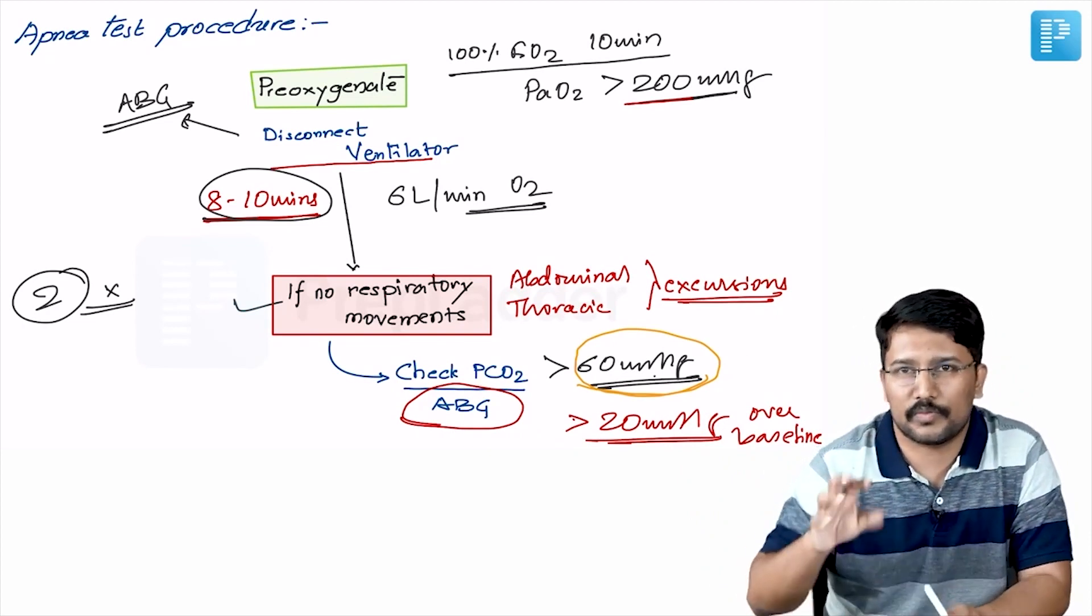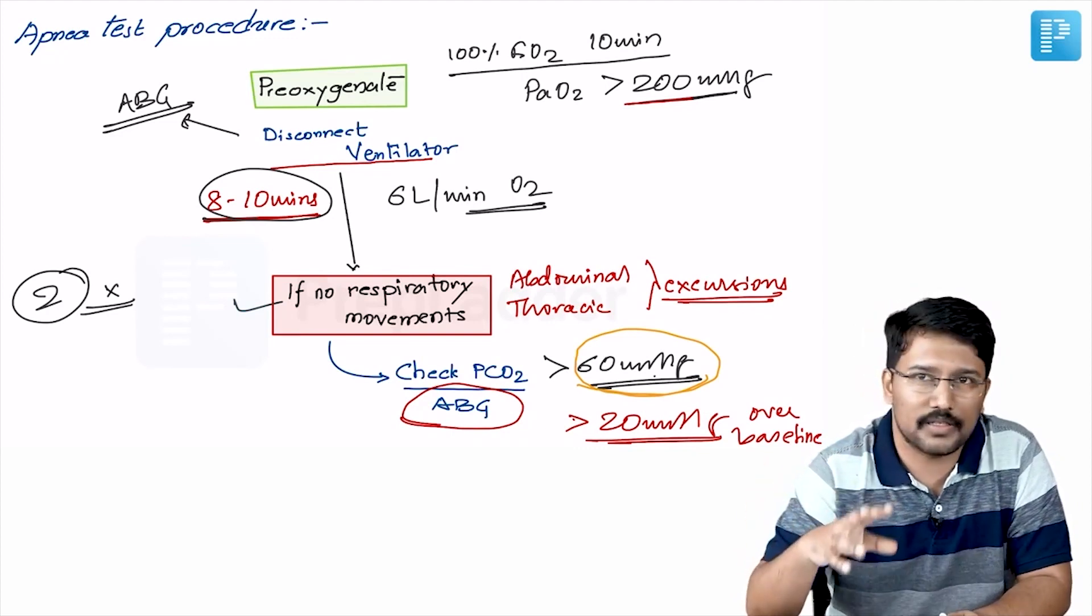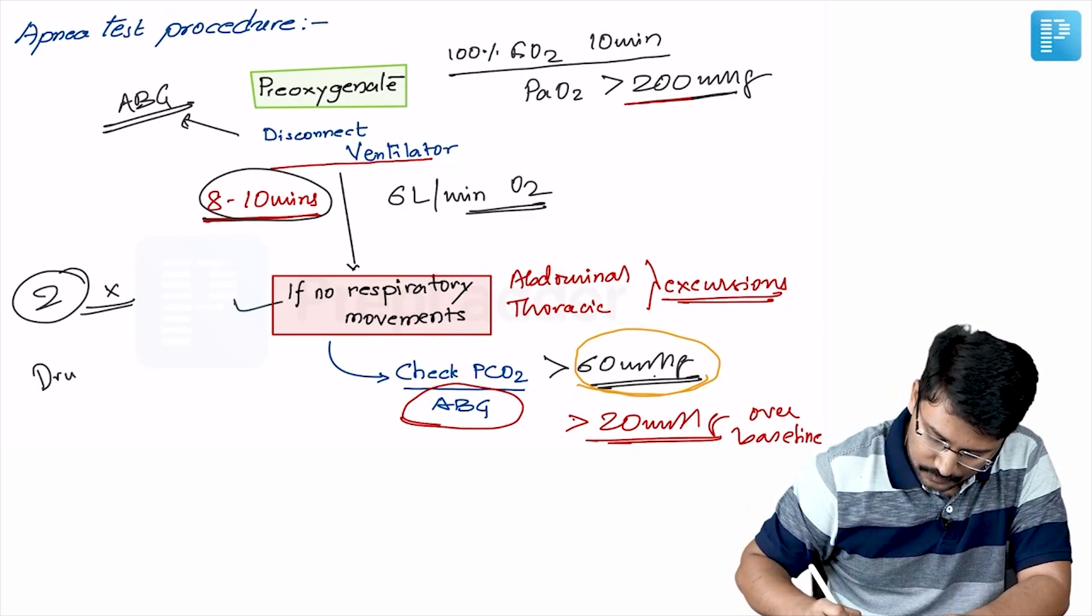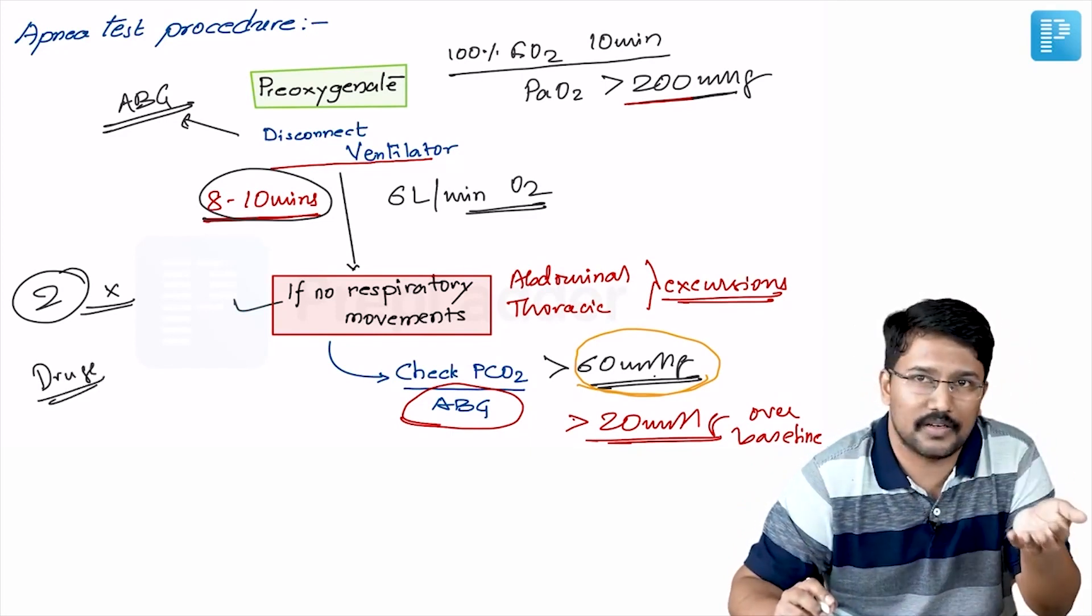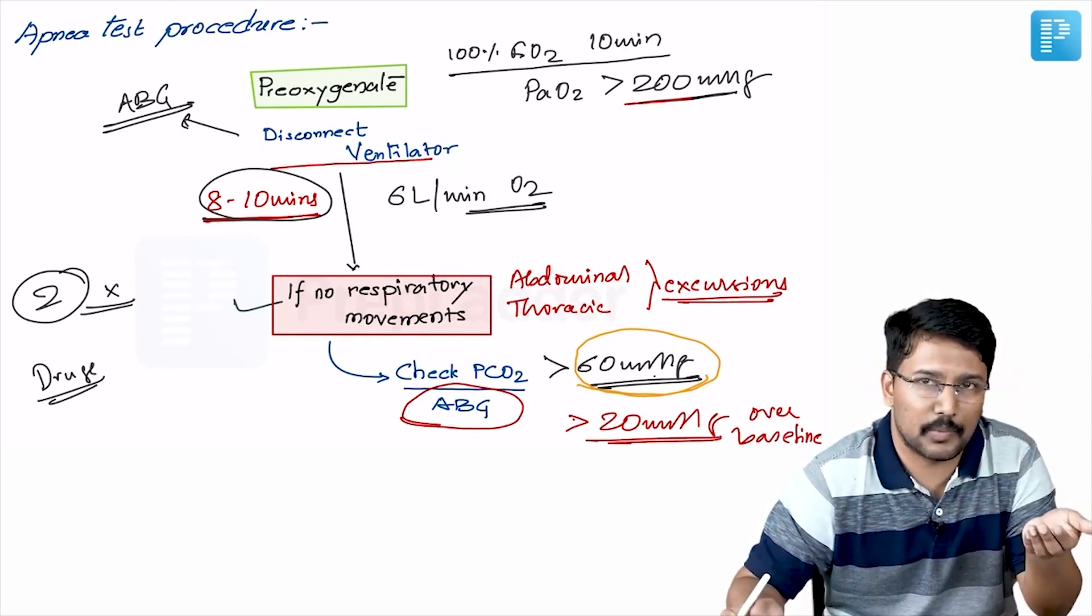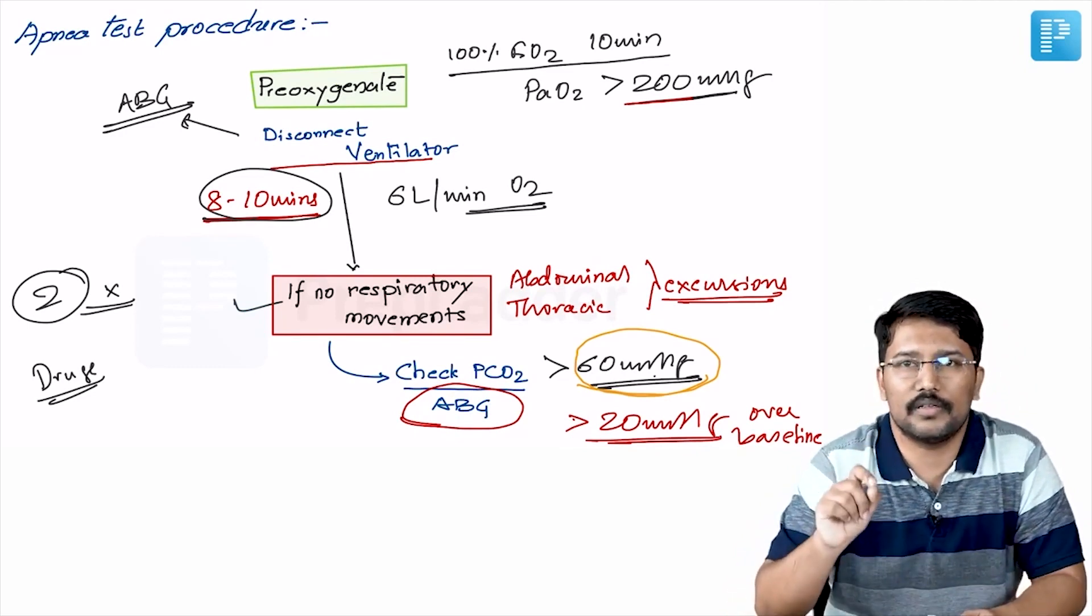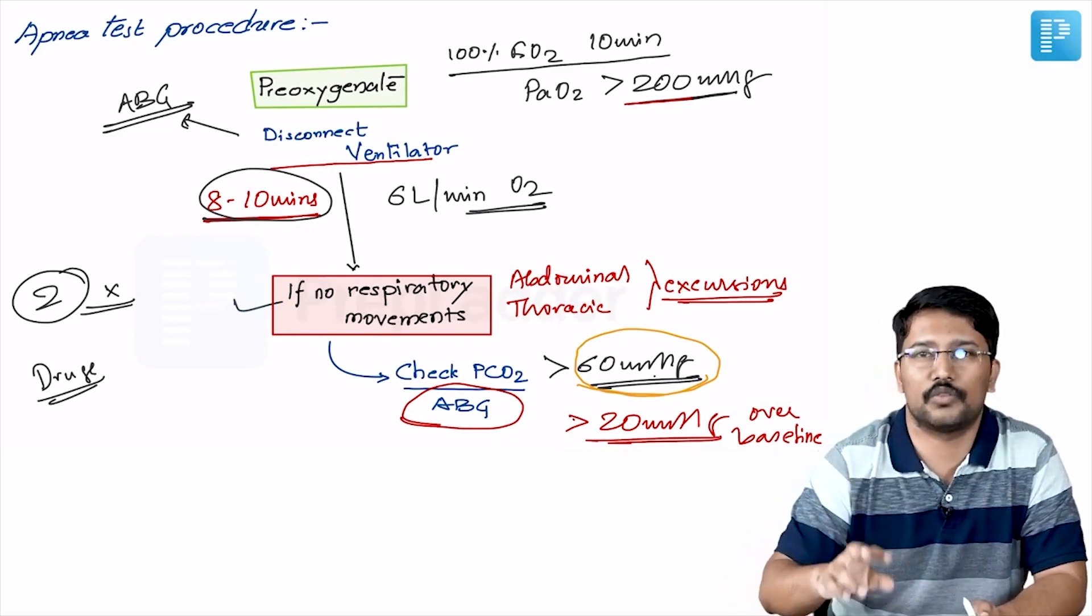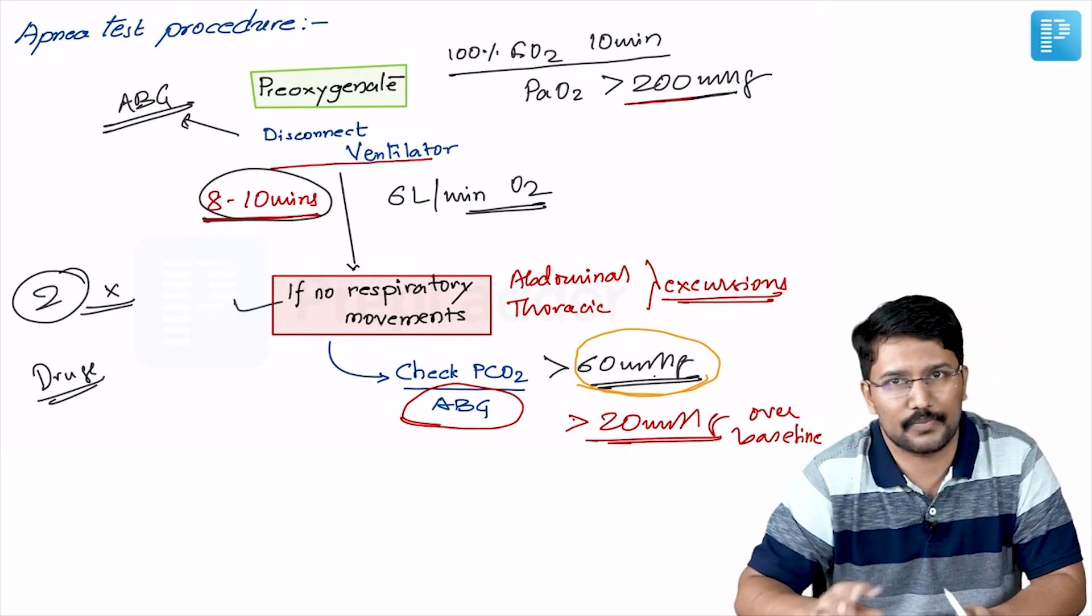Here also, you should remember that apnea test can also be influenced by various parameters or factors and that also should be taken into account. Most importantly, the drugs. There are various drugs which inhibit respiratory center in the brainstem. So those drugs should be ruled out before you initiate the apnea test. And if you already know that the patient is on these drugs, then you should know their half life, you should give sufficient time for those drugs to be cleared from the body before you do the apnea test.